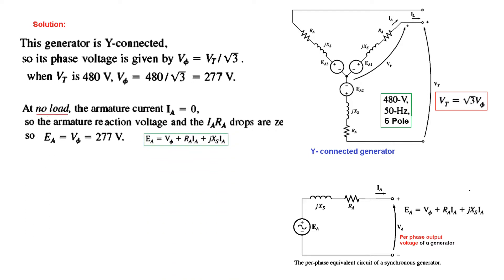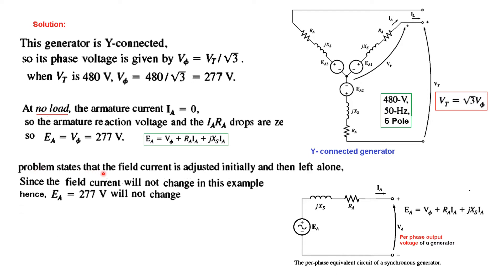At no load, the armature current is zero, so there is no drop — the armature reaction voltage and IR drop are both zero. Therefore EA equals V-phi = 277 V. The problem states the field current is adjusted initially and then left alone, so EA = 277 V will not change for all parts of the problem.